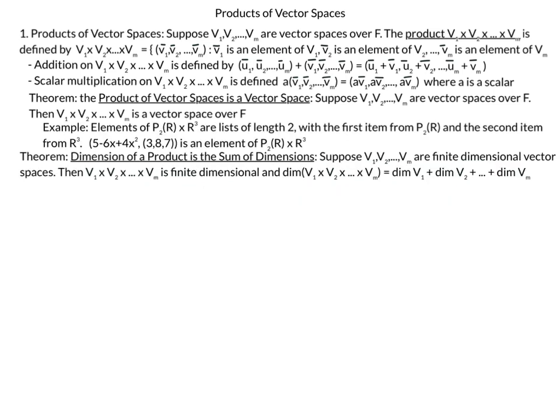This next theorem we'll state without proof: the dimension of a product is the sum of dimensions. Suppose V1, V2, ..., Vm are finite dimensional vector spaces. Then V1 cross V2 cross Vm is finite dimensional, and the dimension of the product of the vector spaces equals the sum of the dimension of each vector space.